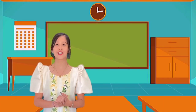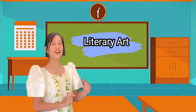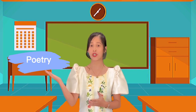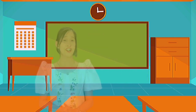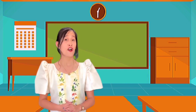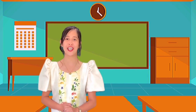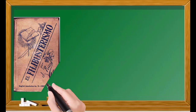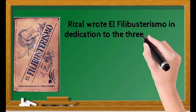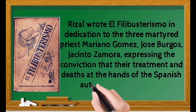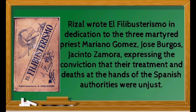Let's proceed to the next contemporary art form: Literary Arts. It is an expression of ideas through writing. Many types of literary artworks can be categorized into poetry, prose, and drama. Here are some examples. First is the famous El Filibusterismo of our national hero, Dr. José Rizal. Rizal wrote El Filibusterismo in dedication to the three martyred priests — Mariano Gomez, Jose Burgos, and Jacinto Zamora — expressing the conviction that their treatment at the hands of the Spanish authorities was unjust.